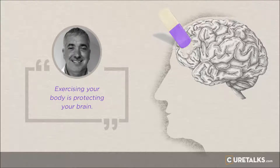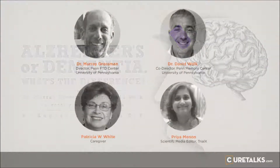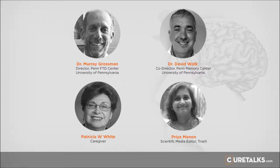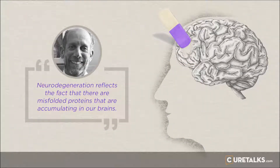If there are misfolded proteins accumulating in parts of the brain important for planning and organizing, that will cause some difficulty with dual tasking and executive functioning. So neurodegeneration is when misfolded proteins accumulate in a particular part of the brain. As these misfolded proteins accumulate, they cause difficulties with various kinds of symptoms. The symptoms worsen with time because the proteins continue to accumulate. It's unlike a stroke, where there's just one sudden event. Instead, the misfolded proteins gradually accumulate and there's a worsening of symptoms.